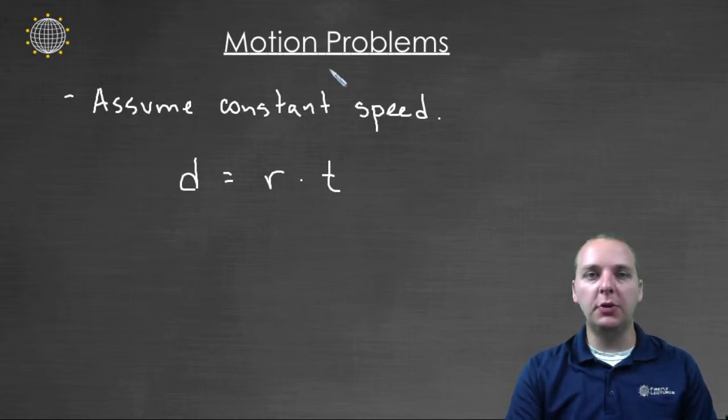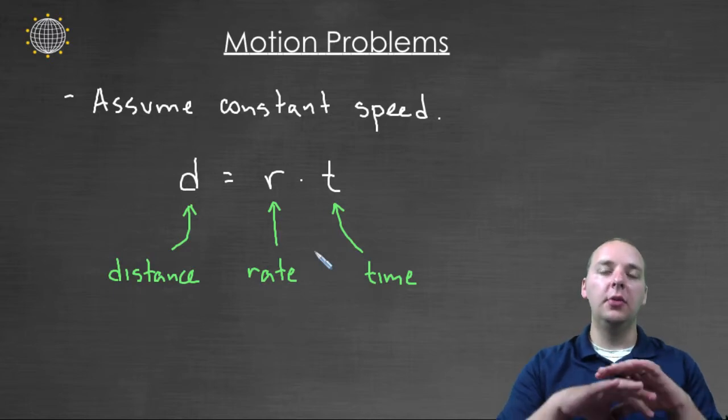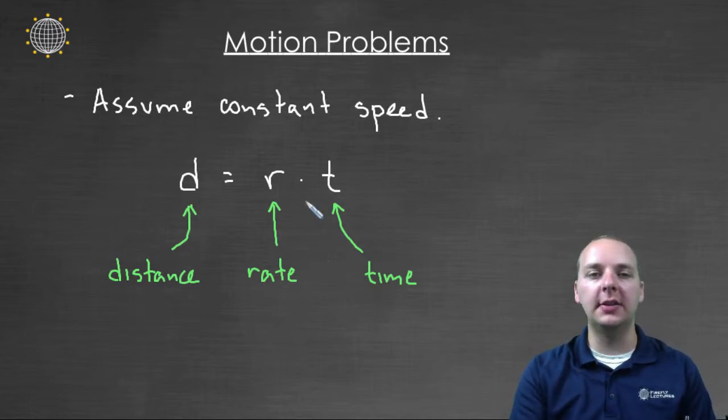Basically for these motion problems you'll have some object moving at a constant speed. The speed's not going to fluctuate, it doesn't speed up, it doesn't slow down. And the problem will give you some information about either its rate of speed, or how far it traveled, or how long it traveled. And it turns out that these three quantities - rate, time, and distance - are related by a basic equation that we need to know. Distance equals rate times time.